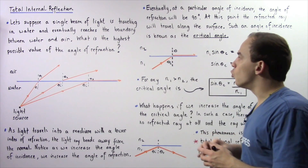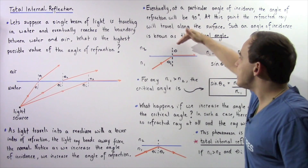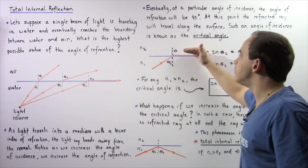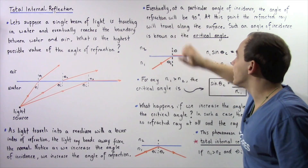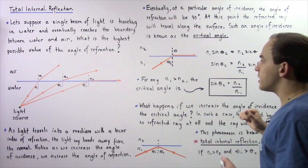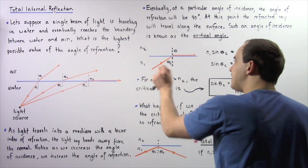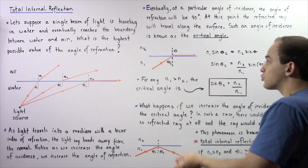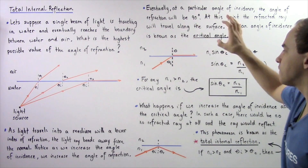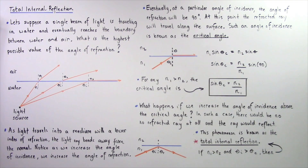If N2 were greater than N1, the ray of light would not bend away from the normal line but would bend toward it. So the critical angle only makes sense when the ray of light is traveling from a medium with a higher index of refraction into a medium with a lower index of refraction, as in this particular case.